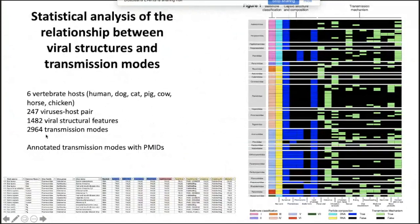What we did that hadn't been done before was carefully scour the literature — some of it computationally driven with standardized search terms — so that for each of the transmission modes we could annotate, with literature support, whether a transmission mode did indeed support transmission of a certain virus or not if our search was negative. Each row in our table is a virus, and each column is a structural property or a transmission mode, giving us something we could compute on.